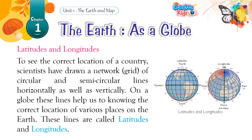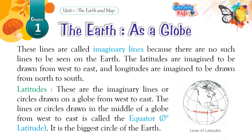Latitudes and Longitudes. To find the correct location of a country, scientists have drawn a network — a grid — of circular and semicircular lines horizontally as well as vertically. On a globe, these lines help us to know the correct location of various places on the Earth. These lines are called latitudes and longitudes. They are called imaginary lines because there are no such lines to be seen on the Earth. The latitudes are imagined to be drawn from west to east, and longitudes are imagined to be drawn from north to south.